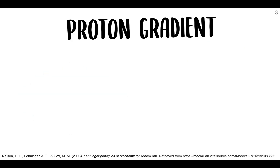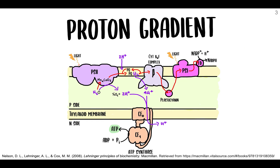So let's talk about the proton gradient. The thylakoid membrane contains the reaction centers, the electron carriers, and ATP-forming enzymes which allow photophosphorylation to function. It's important to point out that protons are not able to cross the membrane on their own, so they need a bit of help. Electron flow results in the movement of protons across the membrane — from the stromal side, or the N side, to the thylakoid lumen, which is the P side.